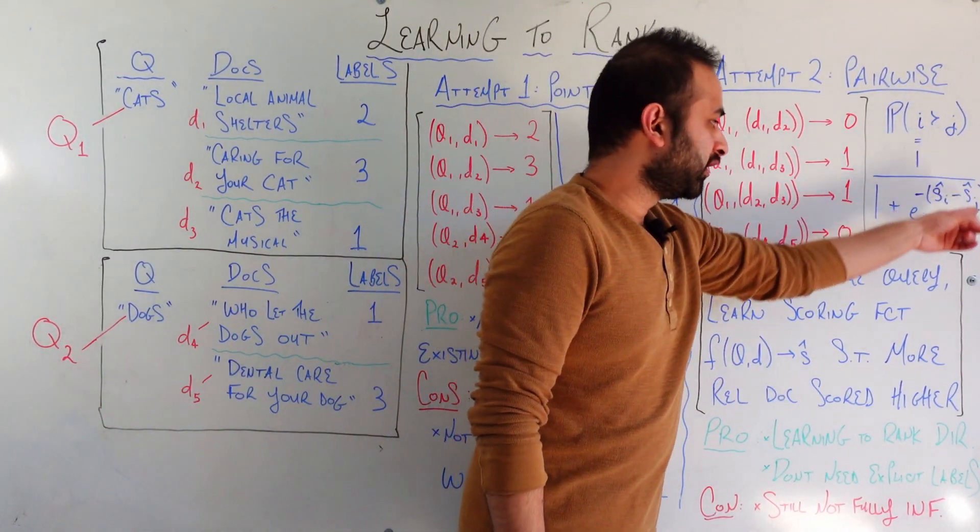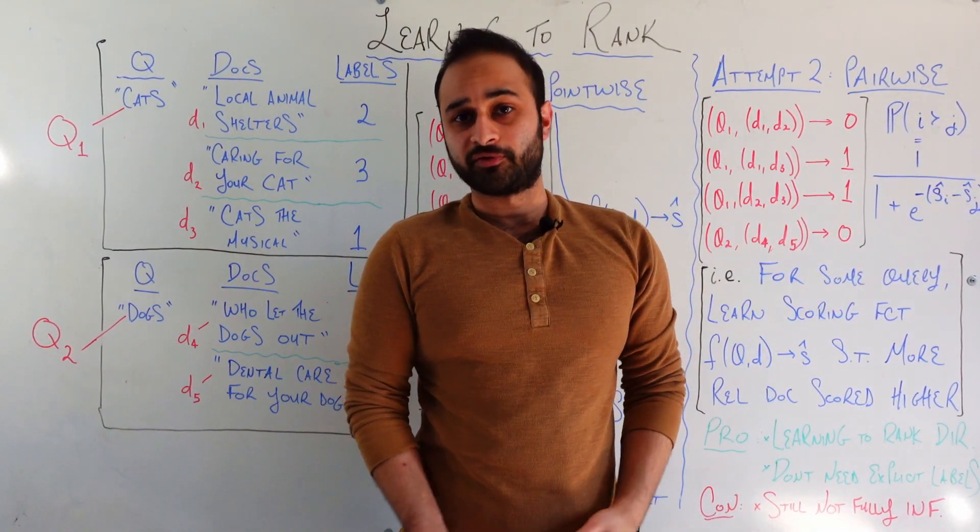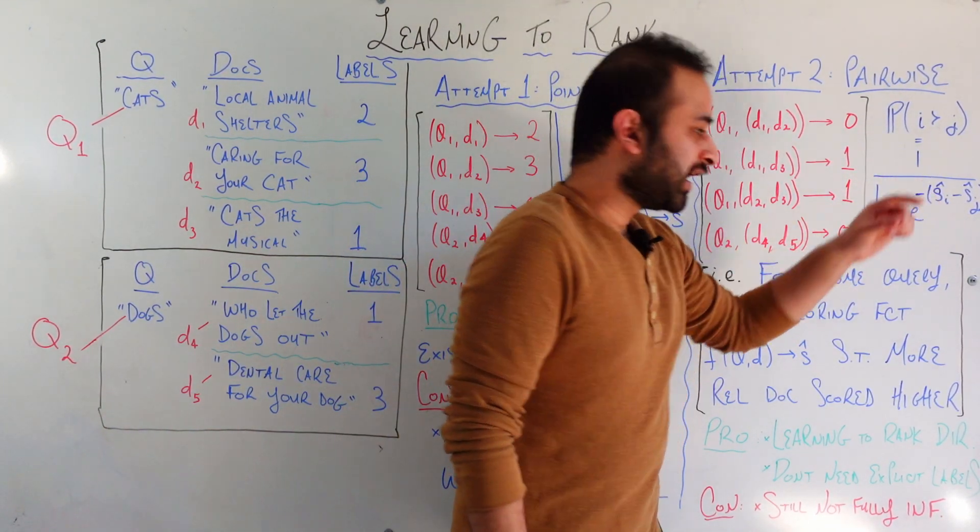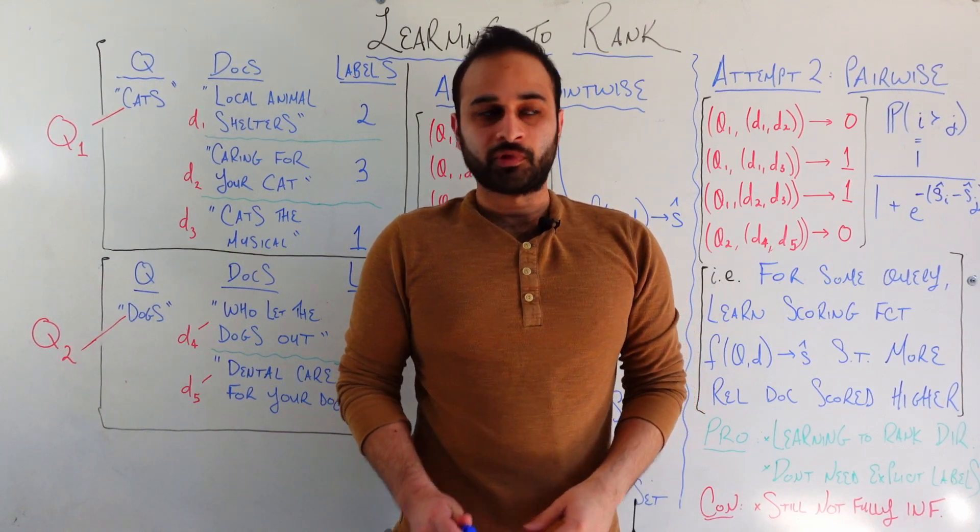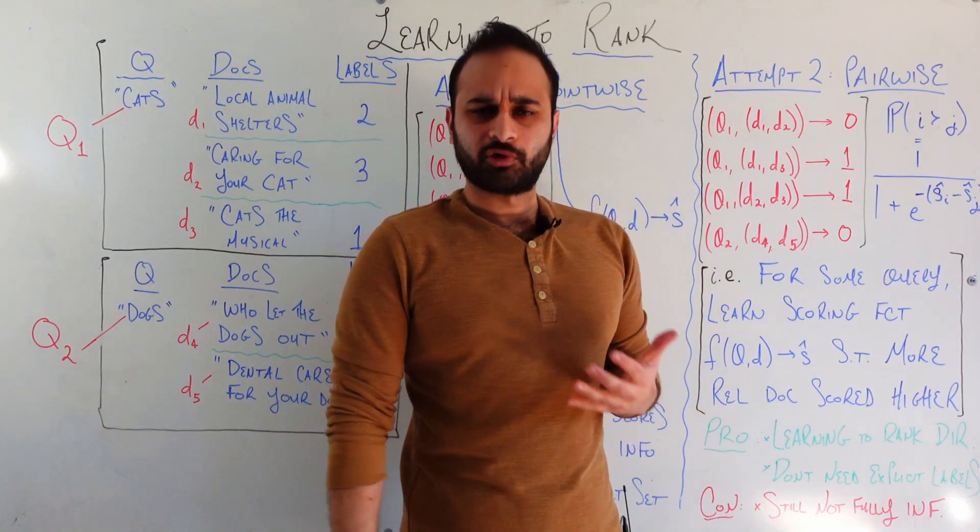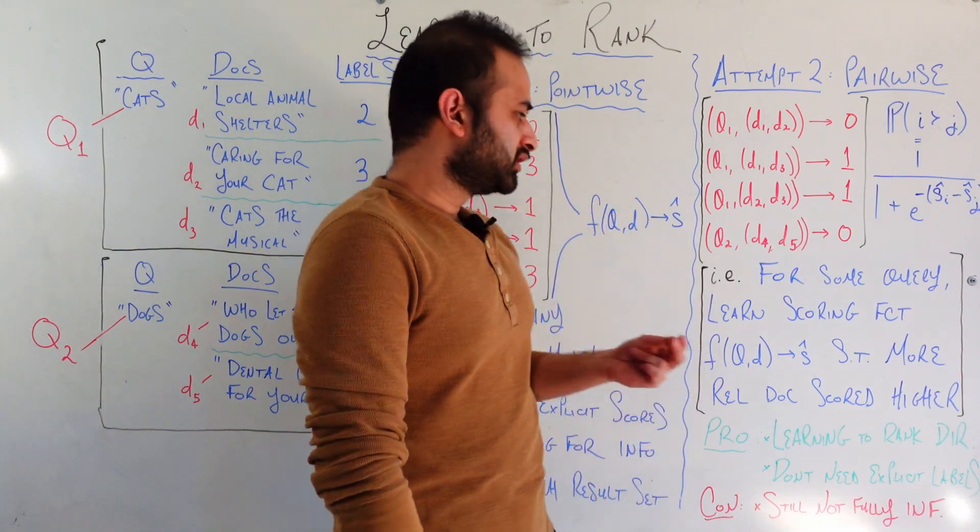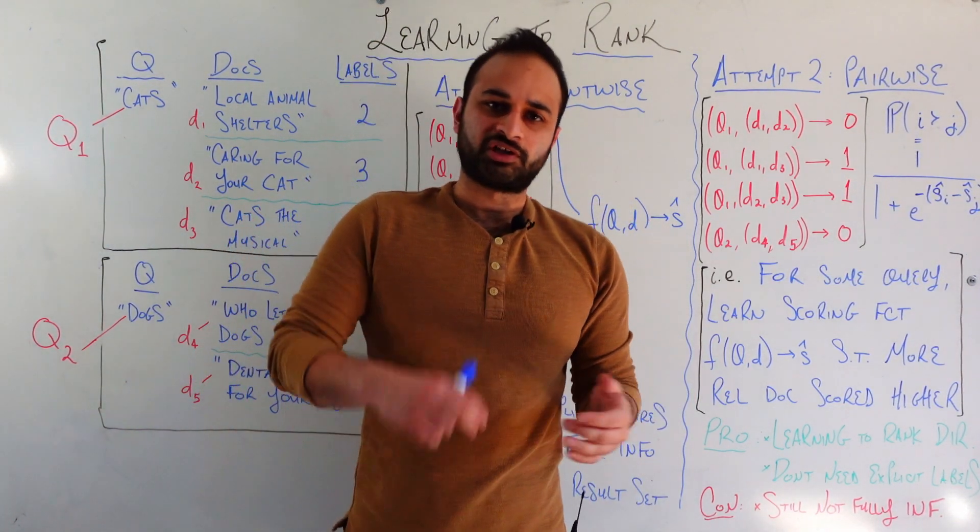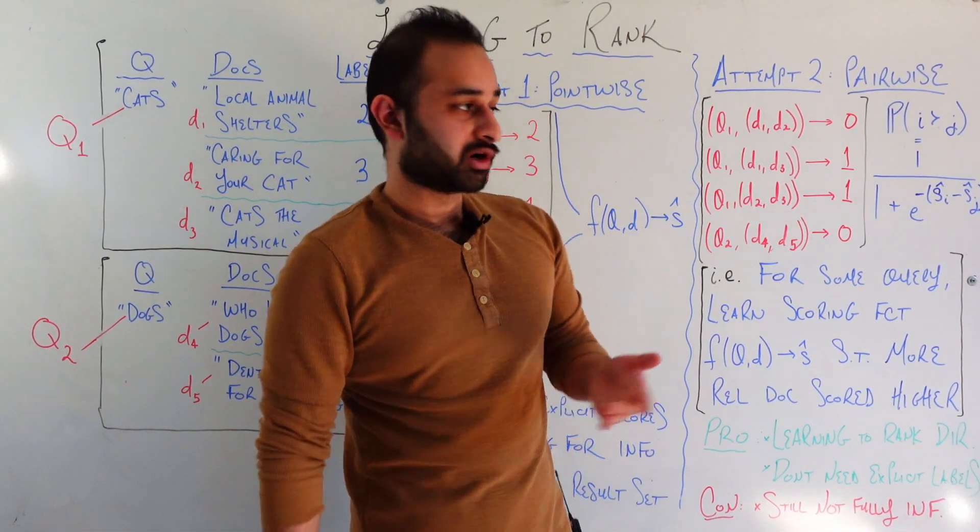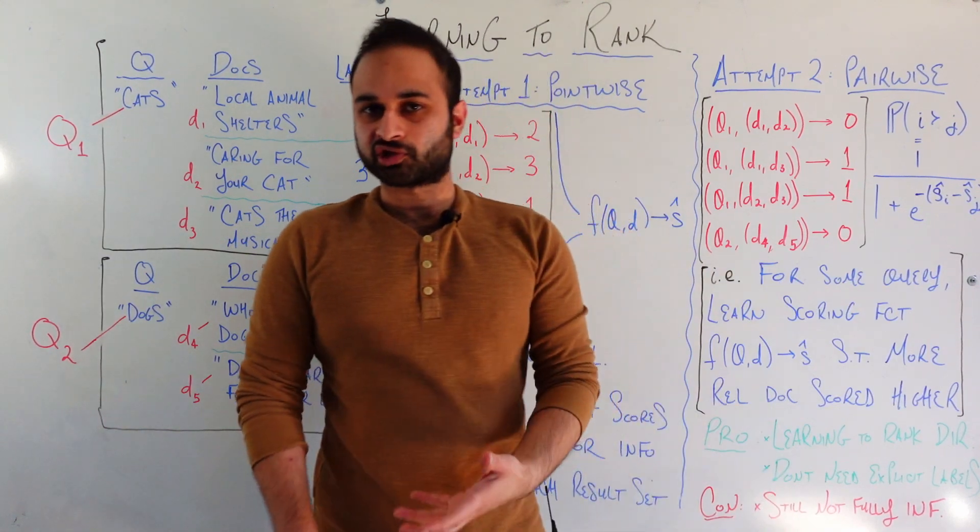And we're going to model that as this very common form that we've seen before, the sigmoid form of 1 over 1 plus E to the negative SI hat minus SJ hat. I think this deserves a little bit of explanation because you might be a little bit lost here. But what's going on explicitly is that we're still trying to learn some kind of function just like here, which is going to take a query and a document and output some kind of score.